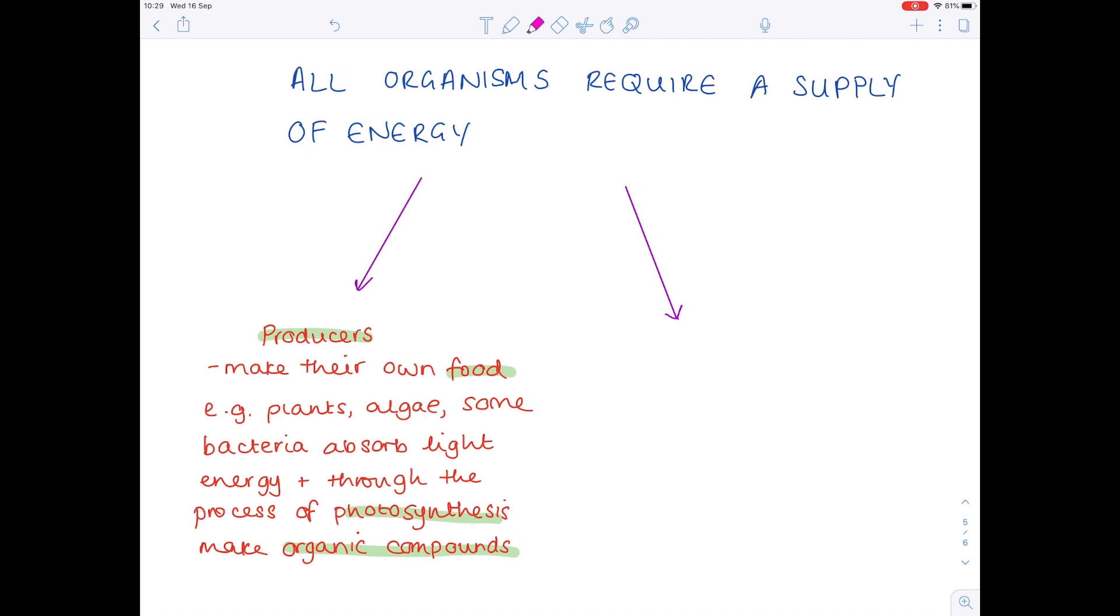The second way in which they do this is through feeding, and that encapsulates the consumers, detritivores, and saprotrophs. Make sure you're clear that the producers are making their own food whereas the consumers, detritivores, and saprotrophs are obtaining organic compounds from other organisms.